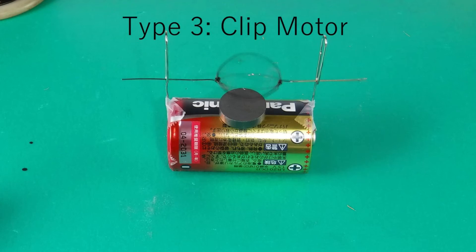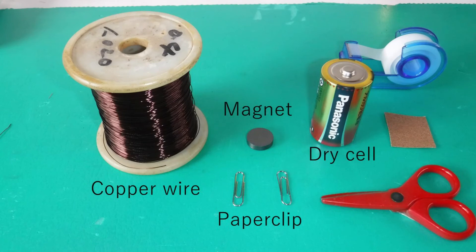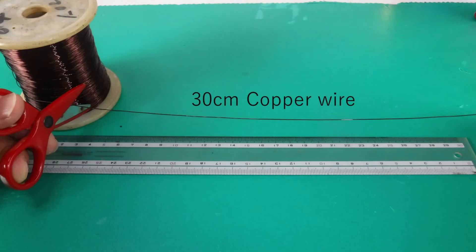Finally, let's make a paper clip motor. These are materials. Make a coil with 30cm copper wire.